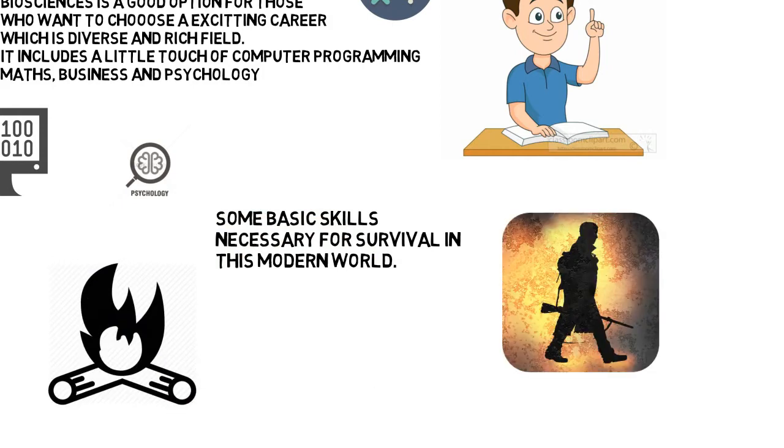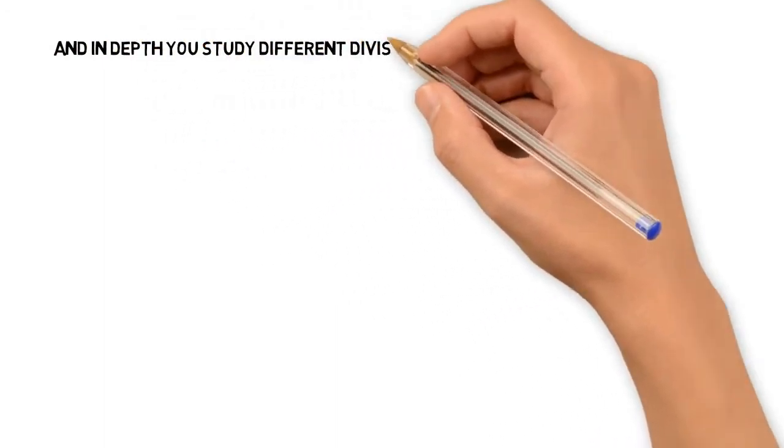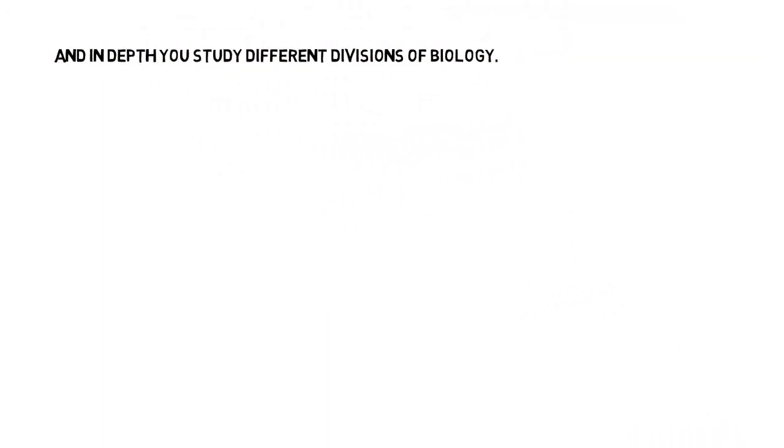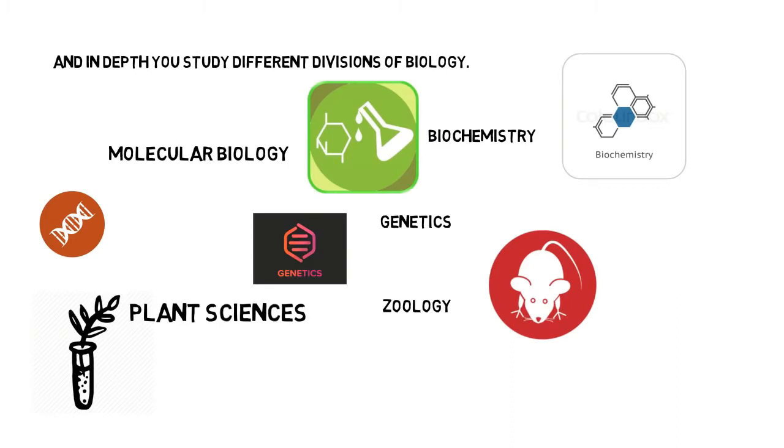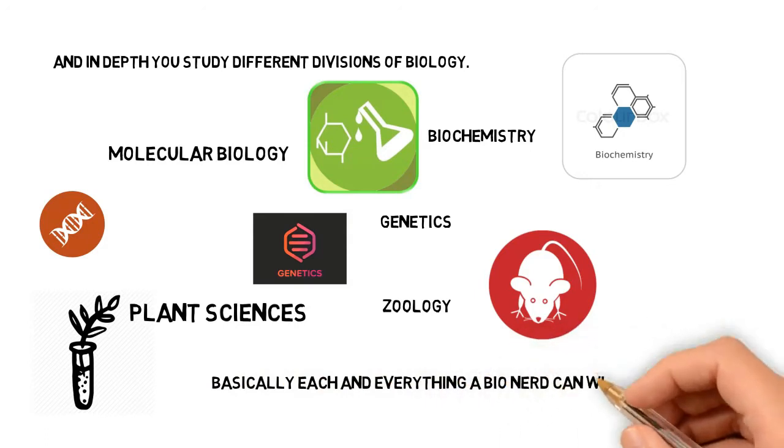Along with basic skills you become a professional of biological divisions such as biochemistry, molecular biology, genetics, plant sciences, zoology. All the things a bio nerd can wish for and more. Biosciences is like heaven for them.